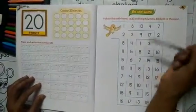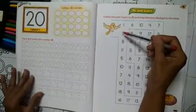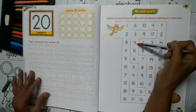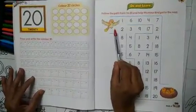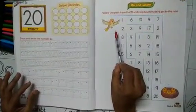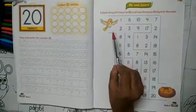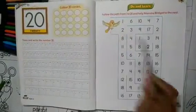Time to learn from 1 to 20. Follow the path from 1 to 20 and help mama bird get to the nest.